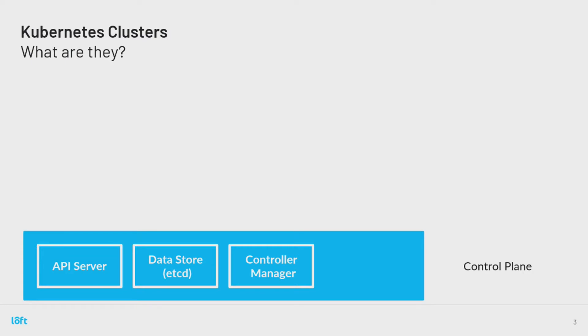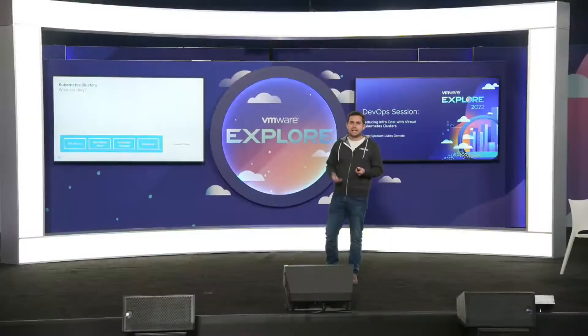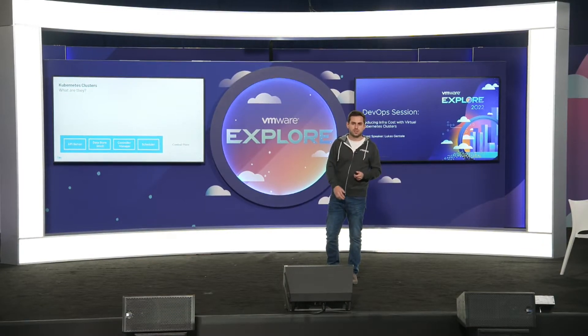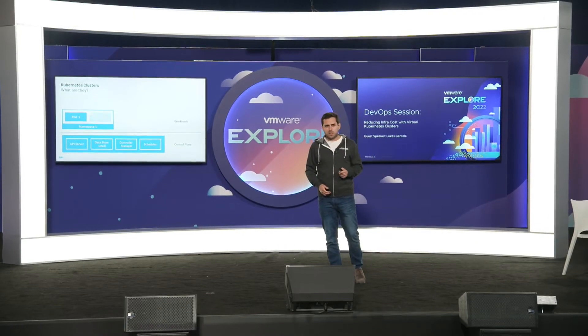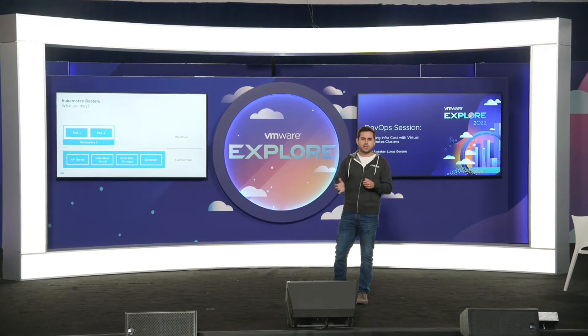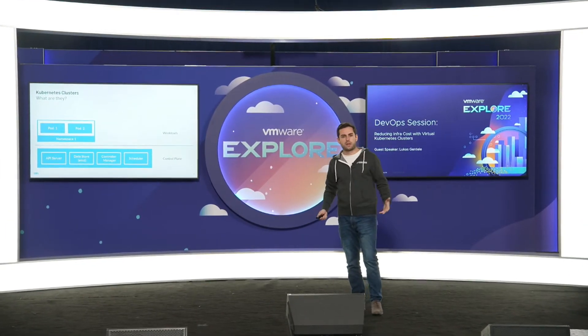Everything — every container you store in Kubernetes, every deployment, service — your entire state in Kubernetes is stored in this data store typically. We also have a controller manager and a scheduler. The controller manager replicates our containers to make sure we have, say, five replicas of a certain application. The scheduler actually launches workloads inside the Kubernetes clusters to the different virtual machines. The workloads are usually hosted in so-called namespaces, grouped by team or user.